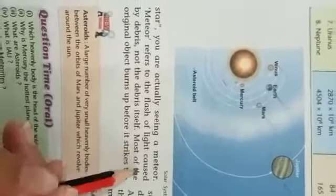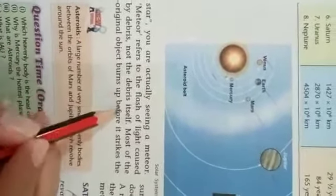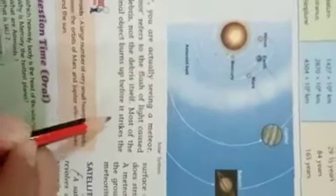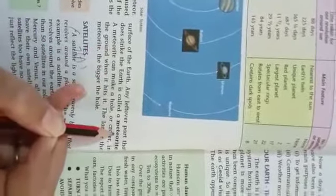Meteor refers to the flash of light caused by debris, not the debris itself. Most of the original object burns up before it strikes the surface of the Earth. Any leftover part that does strike the Earth is called a meteorite.